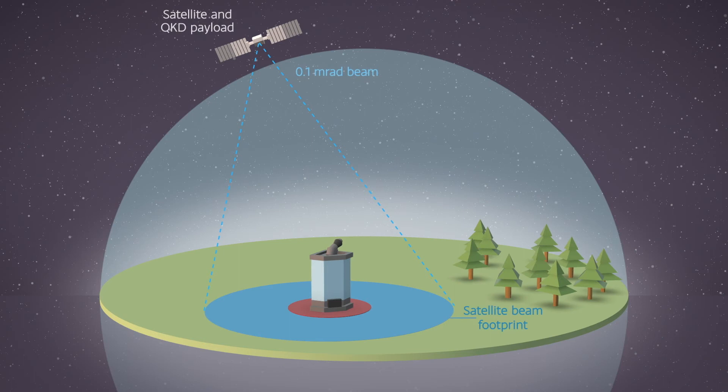The same 0.1 mR light source carried by a satellite, after roughly 500 km of propagation, creates a 2,500 cm diameter footprint.